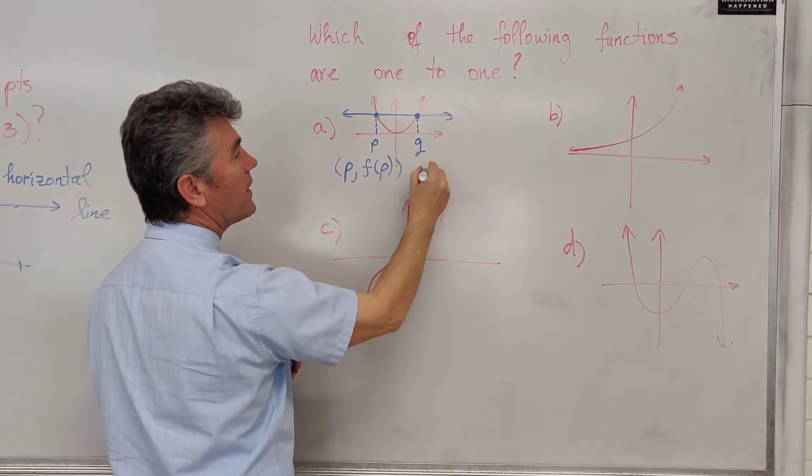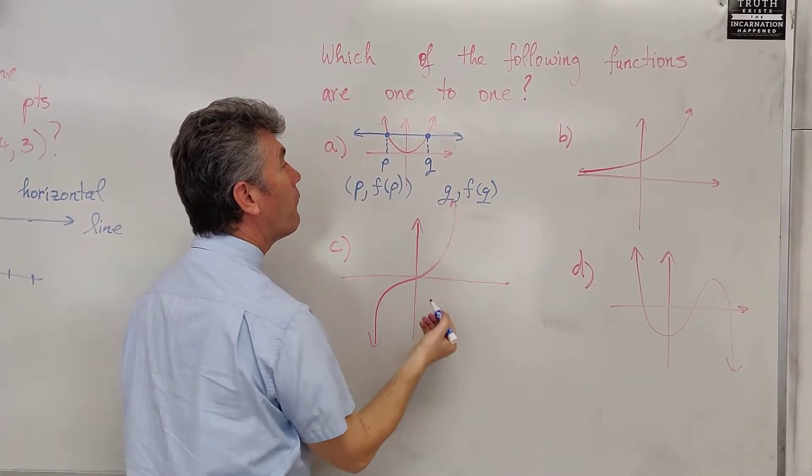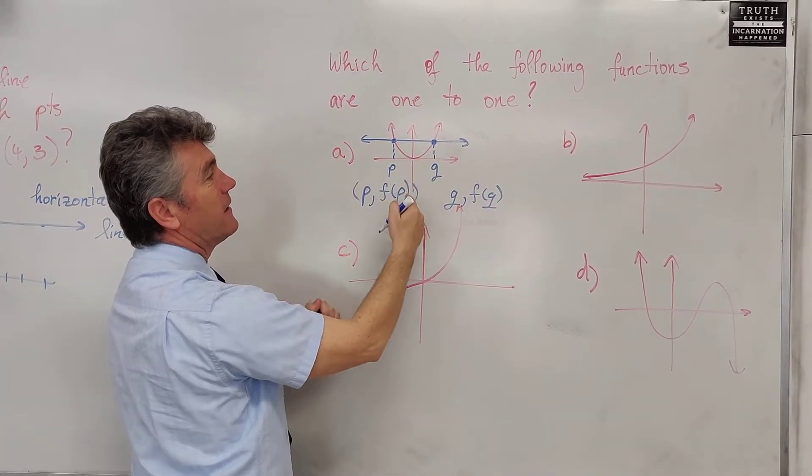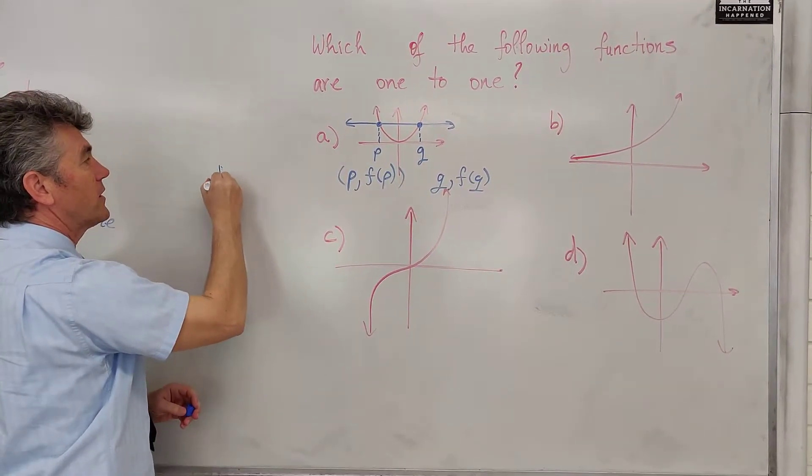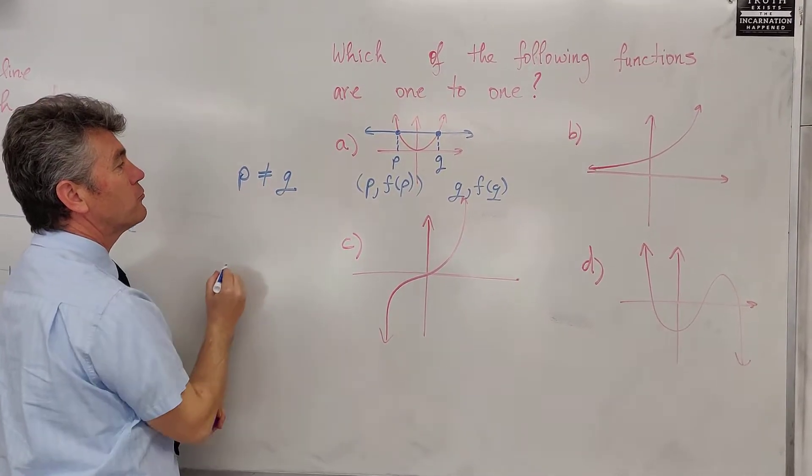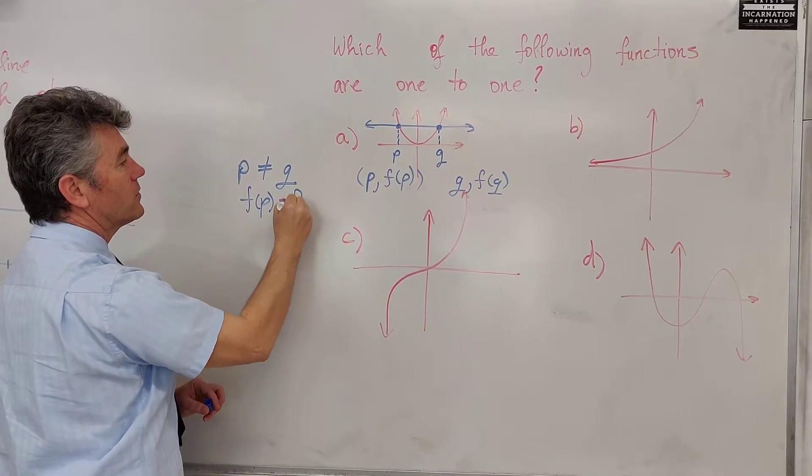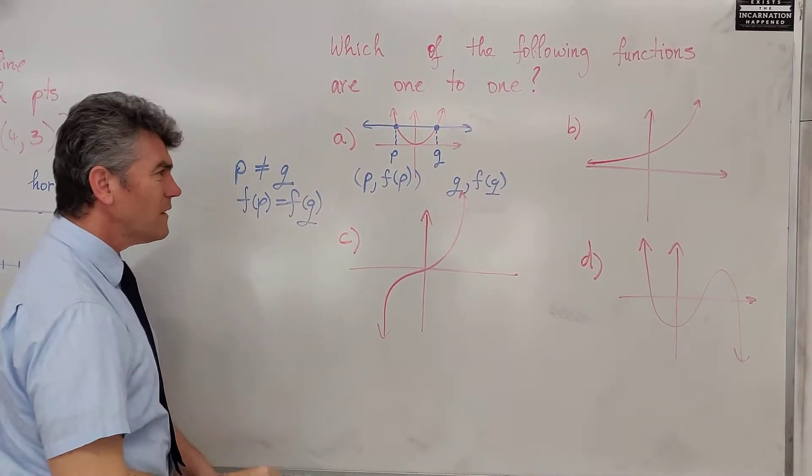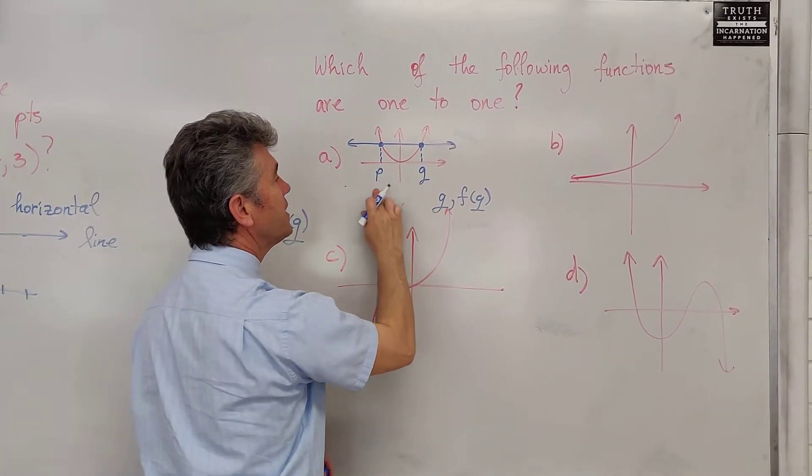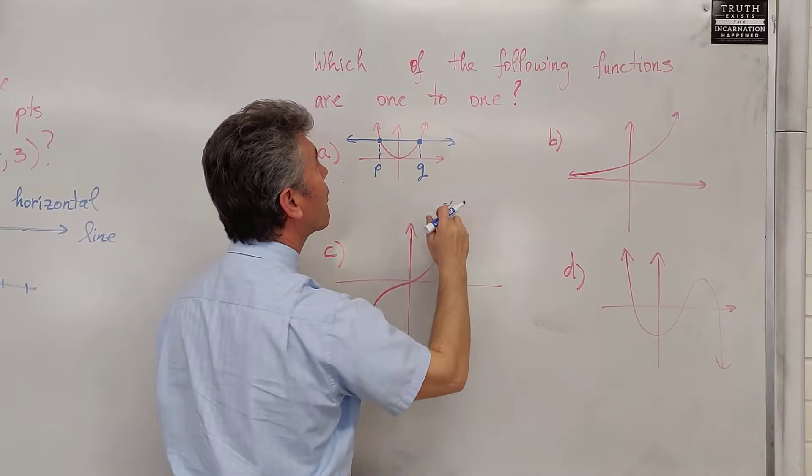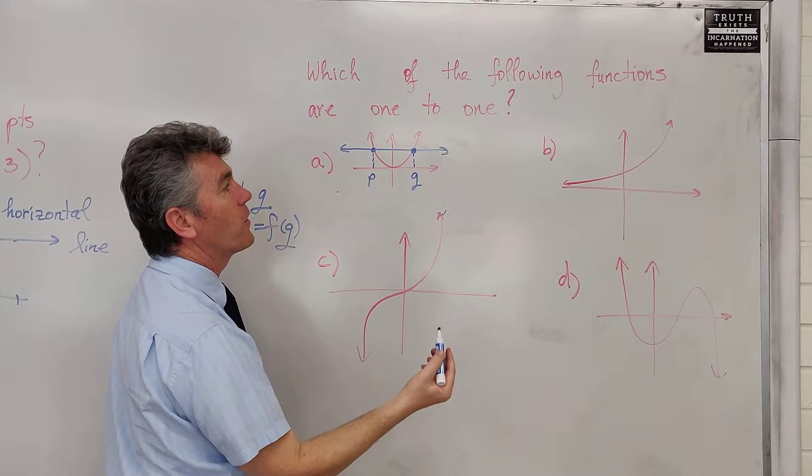The problem is that f of P and f of Q are equal to each other. So, even though P does not equal Q, f of P equals f of Q. A non-complicated explanation: let's make this explanation a lot simpler.